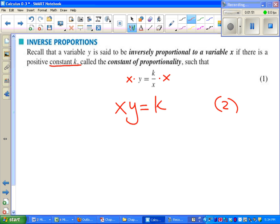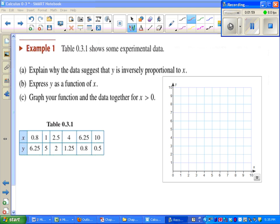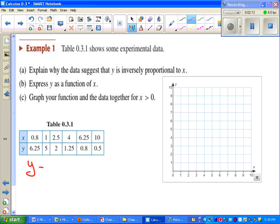So let's take a look at an example where we have an inversely proportional function. It says table 0.3.1 shows some experimental data. Part A says explain why the data suggests that y is inversely proportional to x. If that's true, then we should be able to figure out some formula to figure out what k is. I think it's easier to use the other formula.